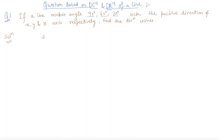As we know that L is equal to cos of alpha, which is cos of 90 degrees, so it is 0.